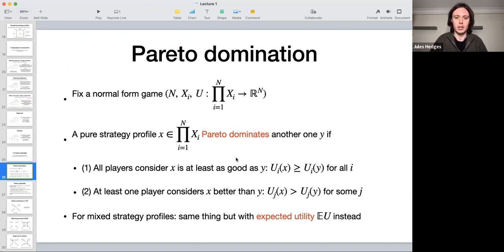So this means that in some sense, X is strictly better than Y because it makes things strictly better for someone without making things worse for anyone else. So this is kind of everybody can agree that X is better than Y, or at least not worse than Y.